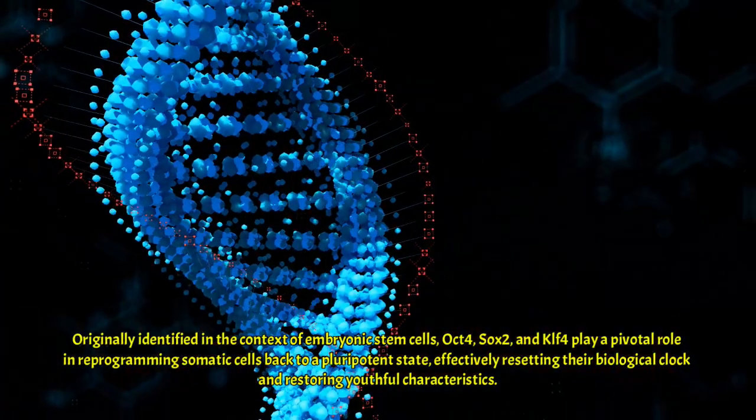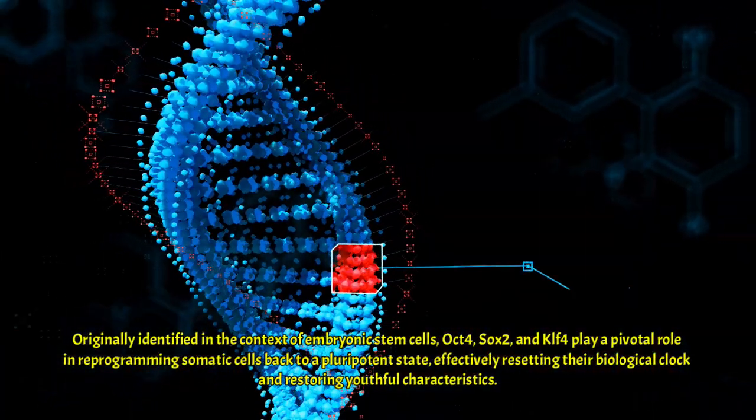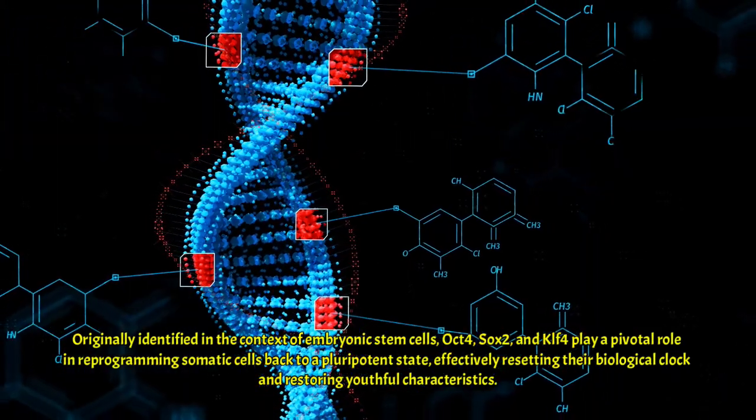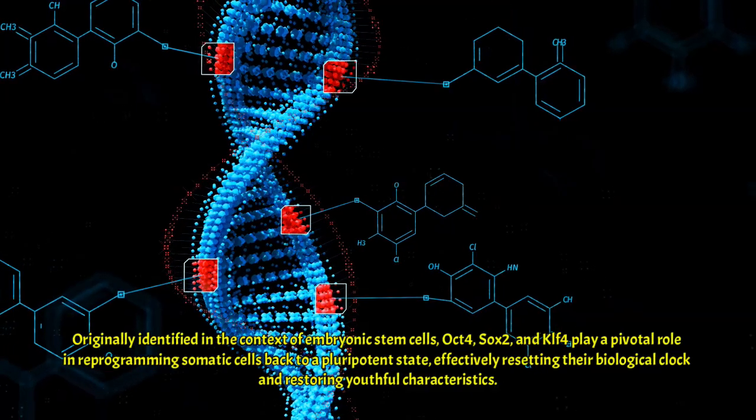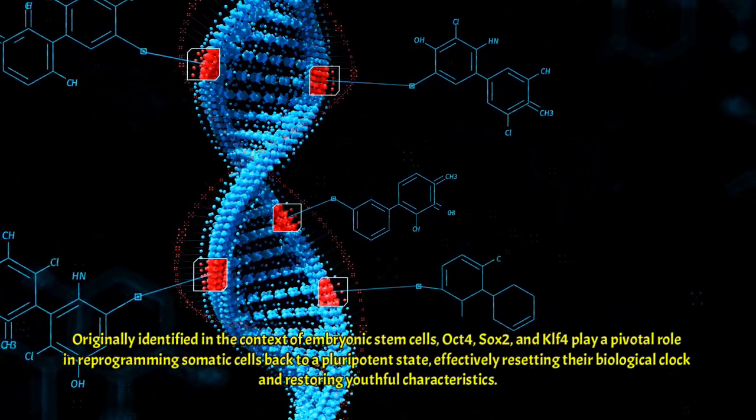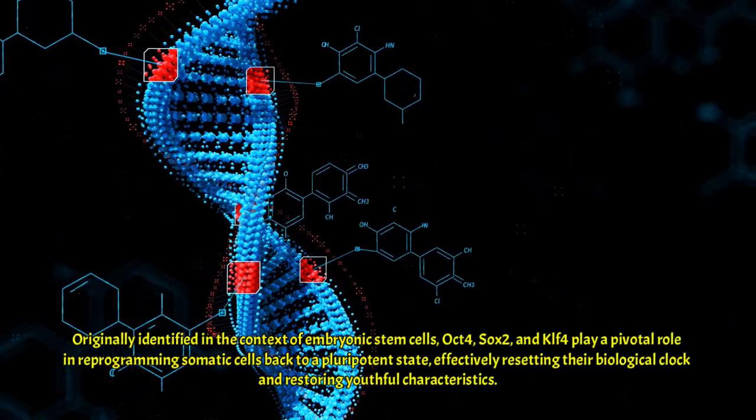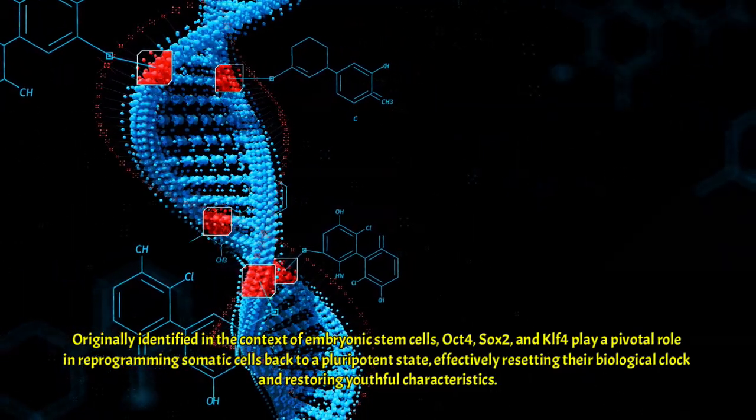These genes are critical components of the transcription factor network that governs cellular identity and pluripotency. Originally identified in the context of embryonic stem cells, OCT4, SOX2, and KLF4 play a pivotal role in reprogramming somatic cells back to a pluripotent state, effectively resetting their biological clock and restoring youthful characteristics.